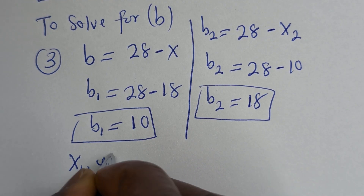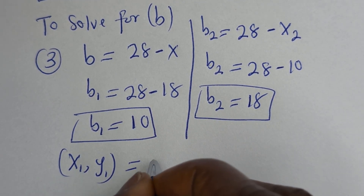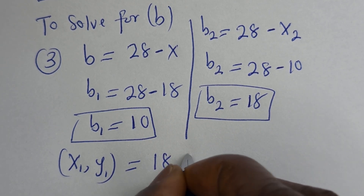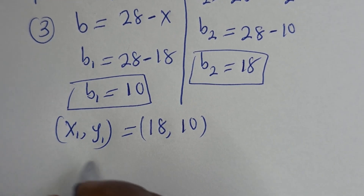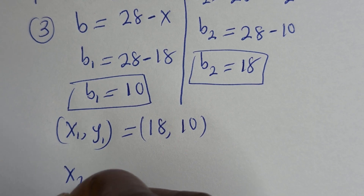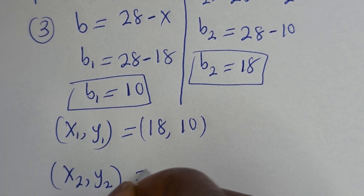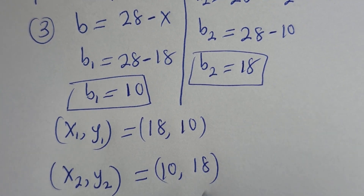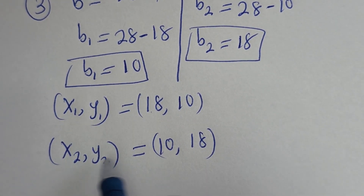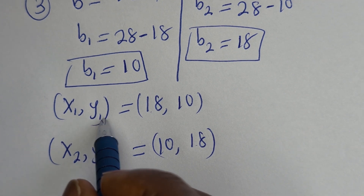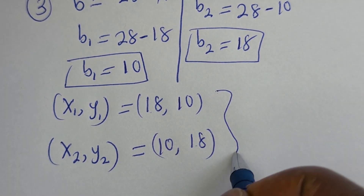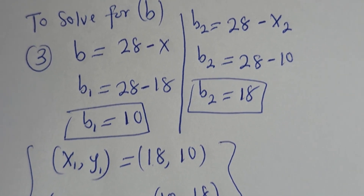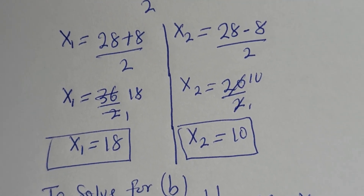Therefore, our final answers are: S1, Y1 is equal to 18, 10. Then S2, Y2 is equal to 10, 18. You can see that the value of S1 is equal to the value of Y2, and the value of Y1 is equal to the value of S2. I hope you enjoyed the video. Thank you for watching. Please don't forget to like, share, comment, and subscribe to my channel. Bye bye.